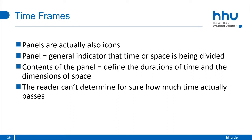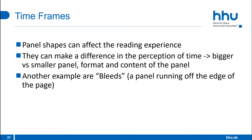A panel is the general indicator that time or space is being divided, and its contents define the durations of time and dimensions of space. Time and space are one and the same in graphic novels, but the reader can't determine for sure how much time actually passes — they guess based on personal experience. Panel shapes can also affect the reading experience and the perception of time. For example, bigger versus smaller panels, format and content all make a difference. A borderless panel takes on a timeless quality, while bleeds — a panel running off the edge of the page — compound this effect so that time is no longer contained by the icon of the closed panel.